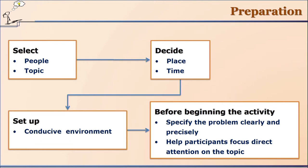You also have to decide on the place and time. This is a time-bound strategy, so how much time you are assigning has to be decided. You must also select a place. Since this is a cooperative and collaborative way of learning, we can have a different type of arrangement in class instead of having benches one after the other. The place should be big enough so that students can move freely, see each other, and interact with each other.